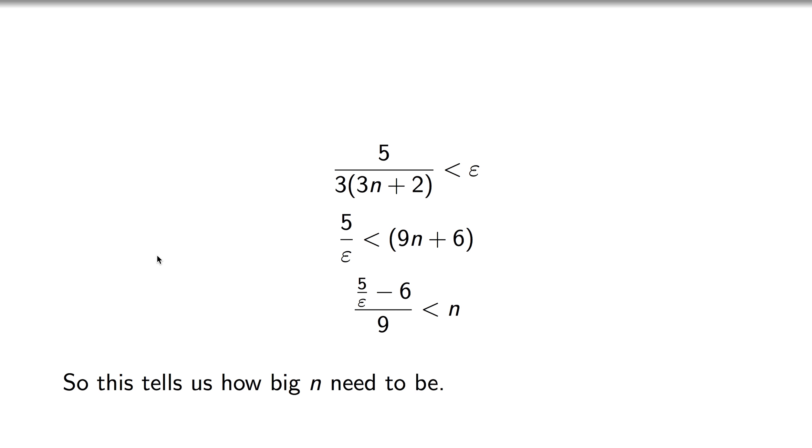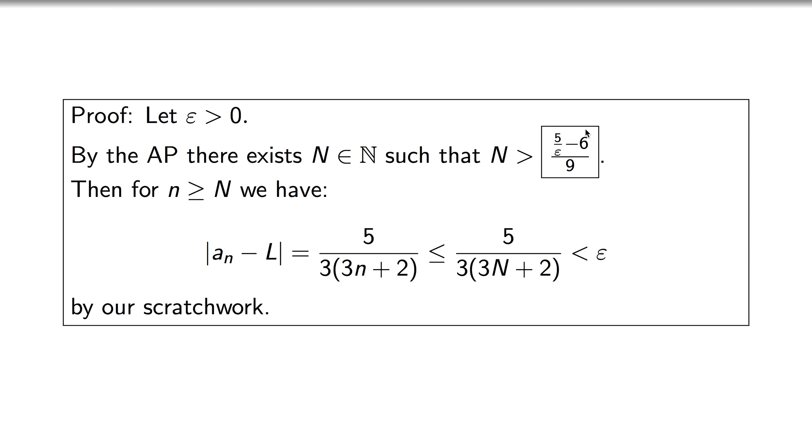With that, we're sort of ready to go. We're going to take this thing here and put it inside that blank in our proof, and then our proof is basically done. So if we have a little n greater than big N, this distance between our sequence and the limit, we already worked out that that's this formula here.